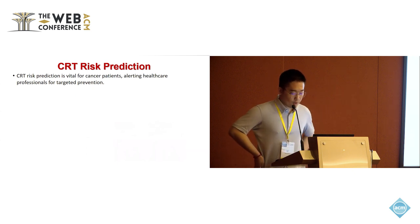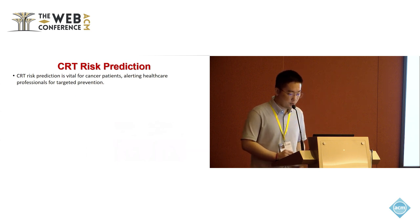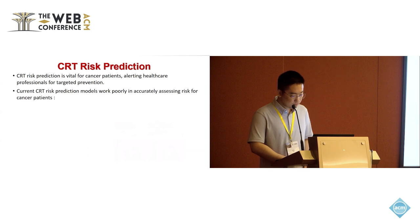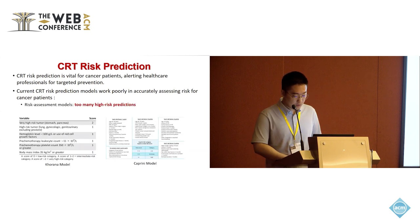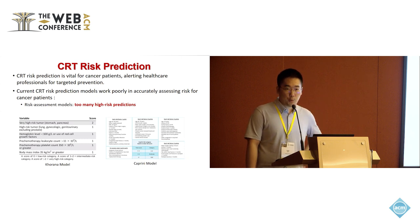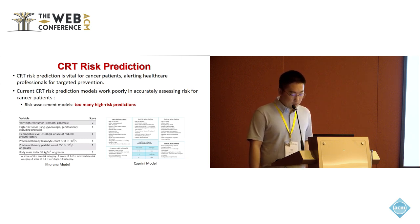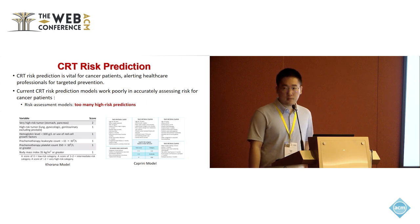CRT risk prediction is vital for cancer patients. It enables healthcare professionals to issue early warnings, allowing for targeted preventive measures. However, current CRT risk prediction models work poorly in accurately assessing risk for cancer patients. Risk assessment models, short for RAMs, are currently widely used for CRT prediction in hospitalized patients. They assign scores to risk factors and then add them up. These models often overestimate the risk in cancer patients.